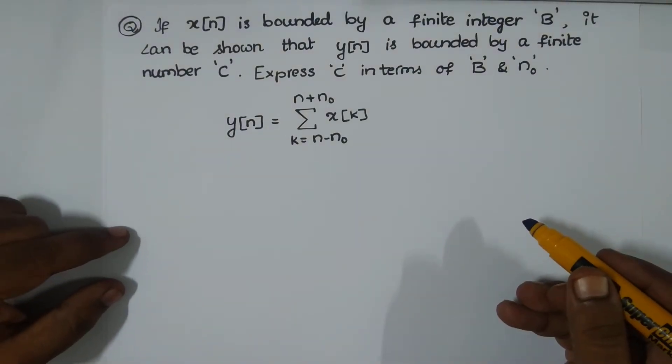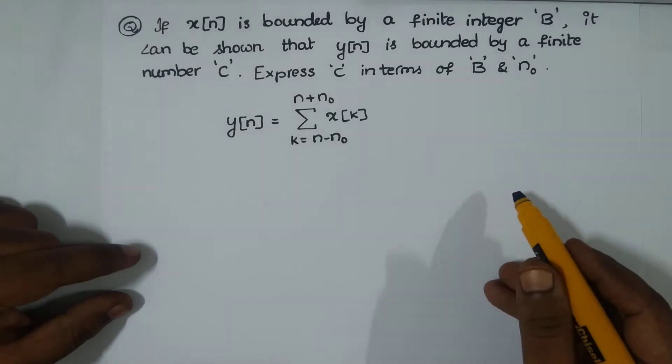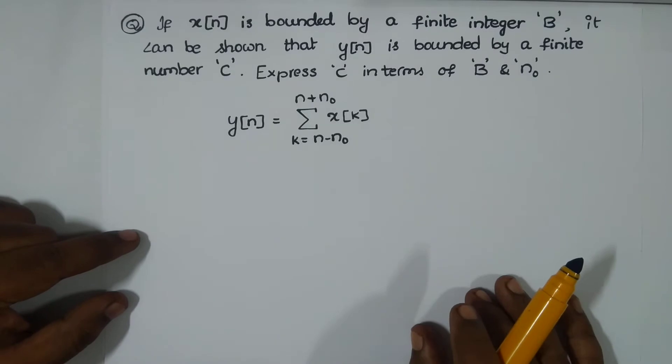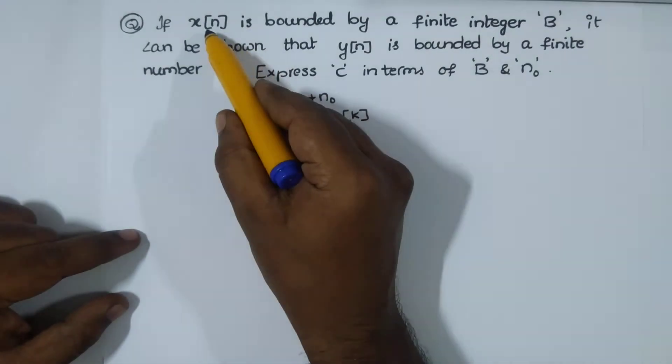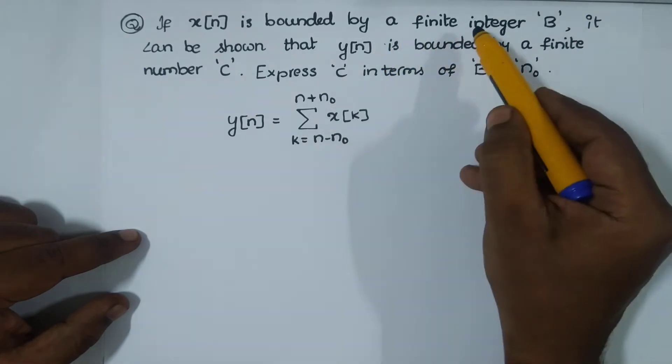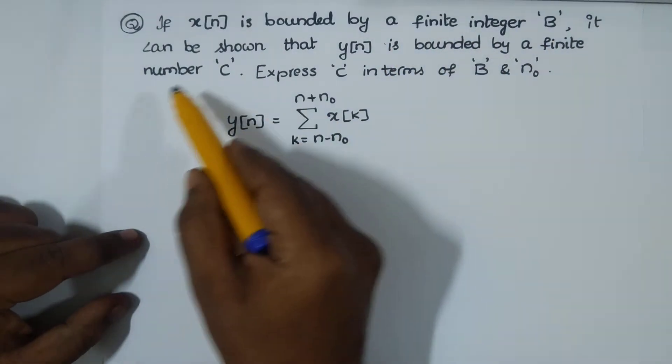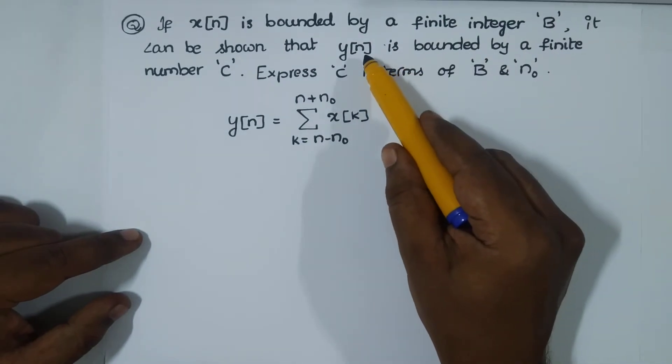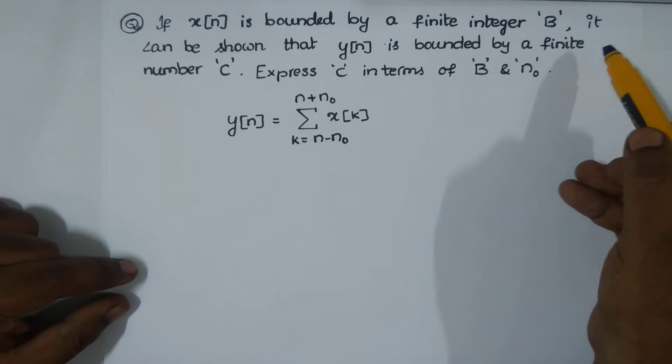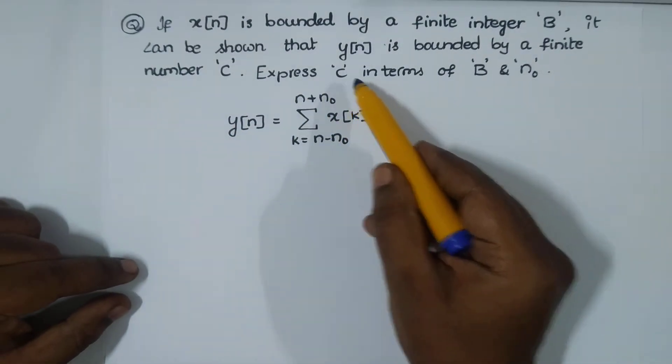Greetings, we have another interesting question from signals and systems asked in a GATE examination. We have a system as follows: if x[n] is the input, and x[n] is bounded by a finite integer B, it can be shown that y[n], the output, is bounded by a finite number C. Now express C in terms of B and n₀.